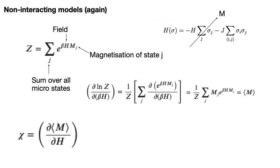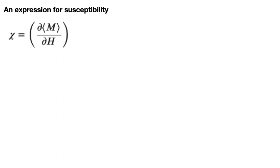The susceptibility chi is equal to the derivative of the magnetisation with respect to the magnetic field strength, as shown in the equation that has just appeared. We are now going to derive an expression for this susceptibility. This should be possible because the susceptibility, like the heat capacity, is a response function, and we have seen in previous exercises that we can compute the heat capacity by taking an ensemble average. How do we do this in order to get the susceptibility?